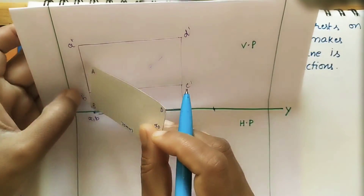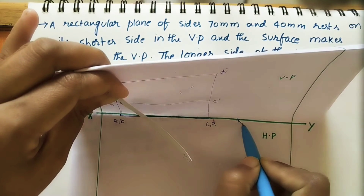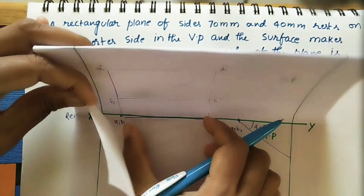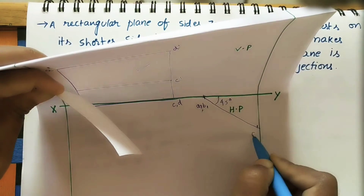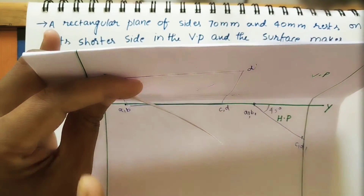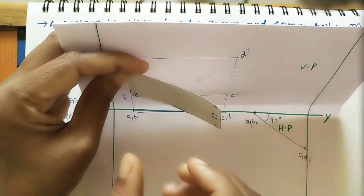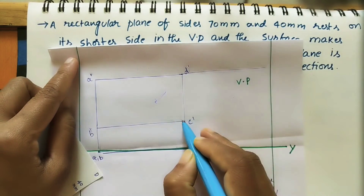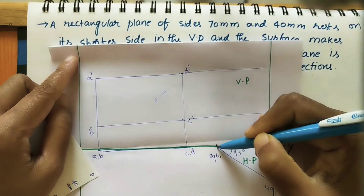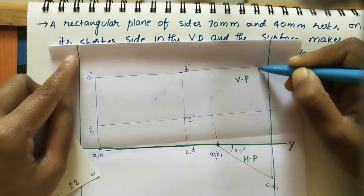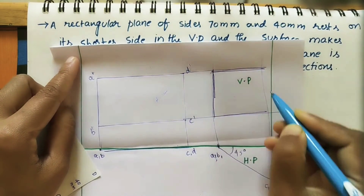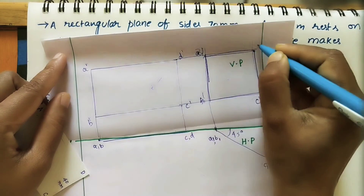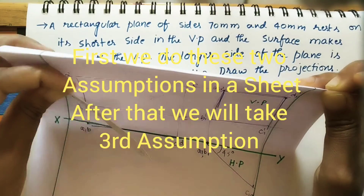Keep the shorter side AB in the VP; in the new position mark it as A1, B1 at the same point. The width makes 45 degrees, so mark C1, D1 accordingly. For the front view, the rectangle appears reduced because it is tilting — draw projector lines to find the reduced rectangle and mark the corners A1′, B1′, C1′, D1′.